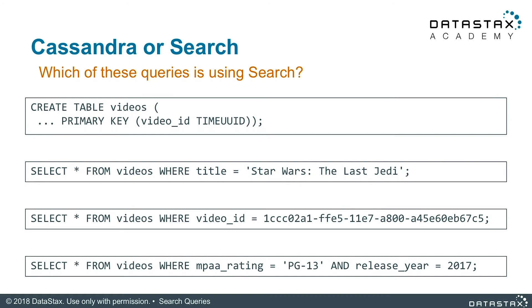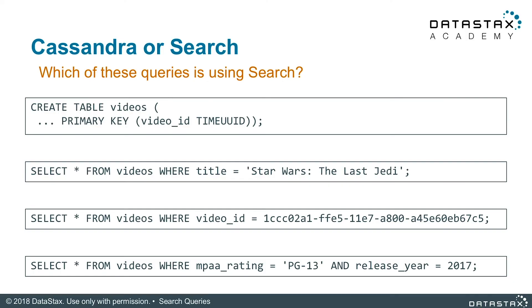Now it's time for a pop quiz. Which of these queries is using DSC Core versus DSC Search? Remember, the video table has a primary key of video_id. The first and third queries are using search because they are searching on column titles, rating, and release year — none of those are our partition key video_id.